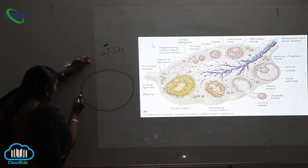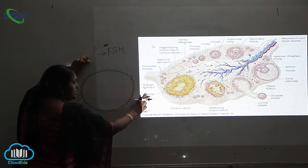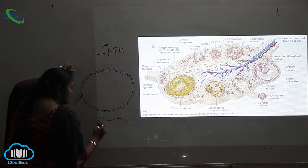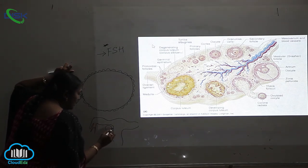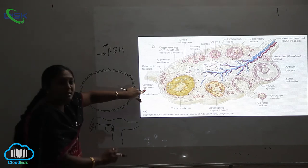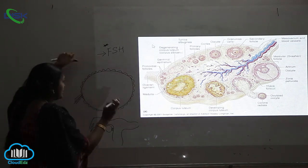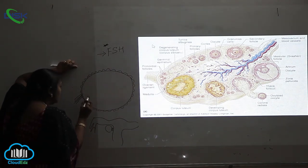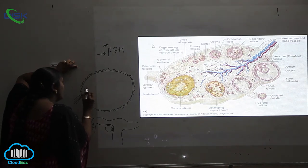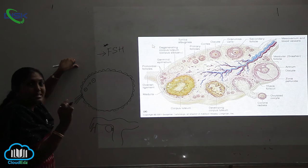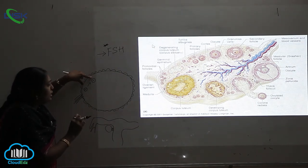You can see a hand-like structure connecting the ovary, which is called the ovarian ligament — as I showed in the previous diagram. Inside the ovary, some follicles form with a single cell and single nucleus; these are called primordial follicles.